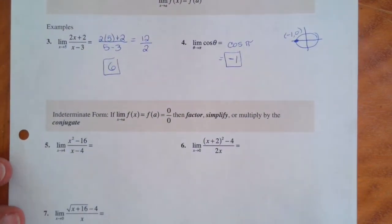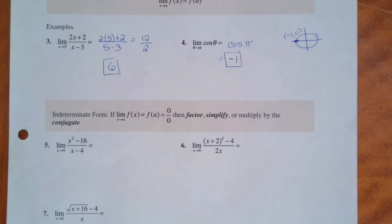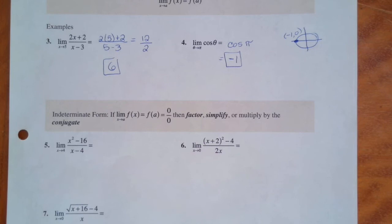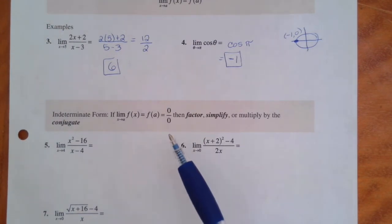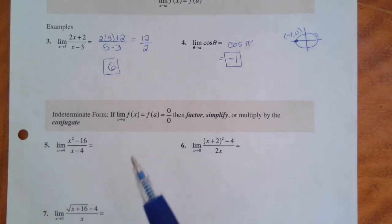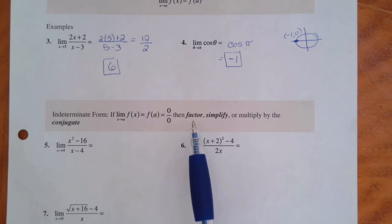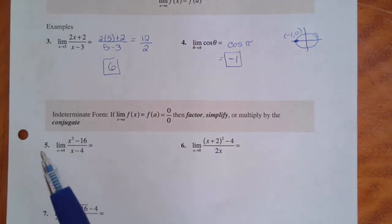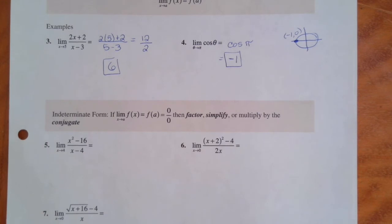The next concept is indeterminate form. When you do direct substitution on a limit problem and your answer comes out to 0/0, that's called indeterminate form. It does NOT mean there's no solution — it means you can find a numerical answer. The second big rule is: if you get 0/0, that's indeterminate form, which means you can keep working by either factoring, simplifying, or multiplying by the conjugate.